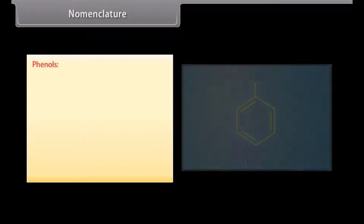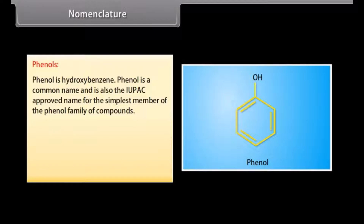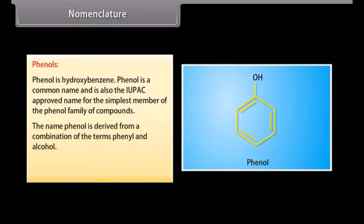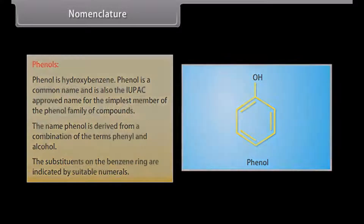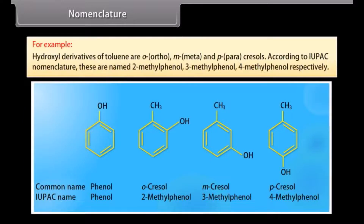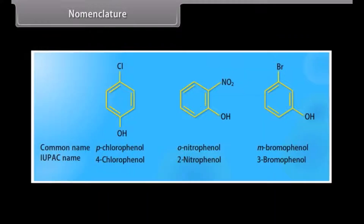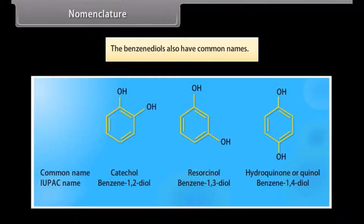Nomenclature of phenols. Phenol is hydroxybenzene — 'phenol' is both the common name and the IUPAC approved name for the simplest member of the phenol family. The name is derived from a combination of 'phenyl' and 'alcohol.' Substituents on the benzene ring are indicated by numbers. For example, hydroxyl derivatives of toluene are ortho-, meta- and para-cresols, named by IUPAC as 2-methylphenol, 3-methylphenol and 4-methylphenol respectively. Benzene diols also have common names.